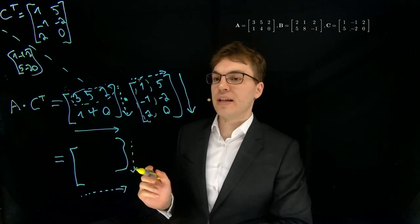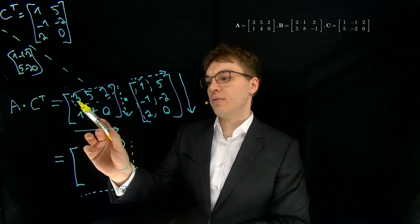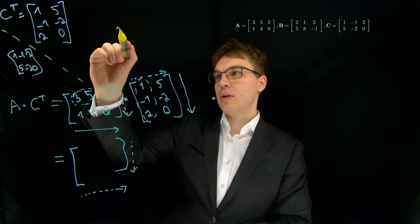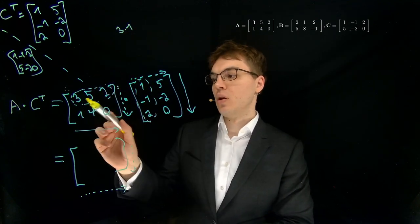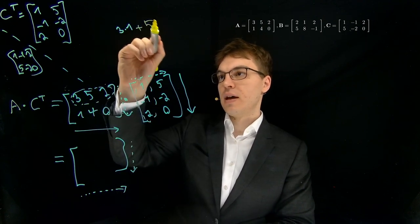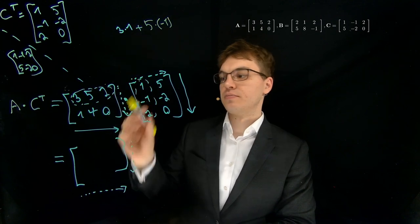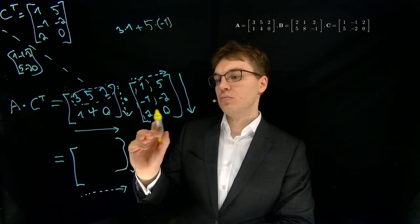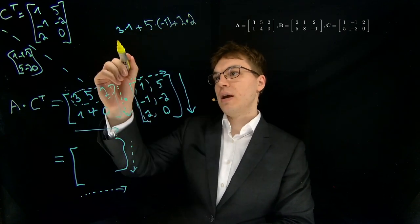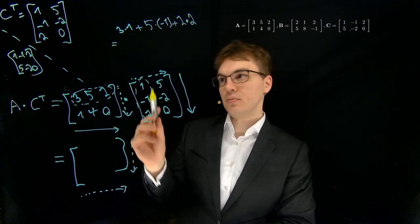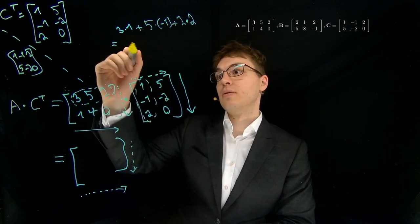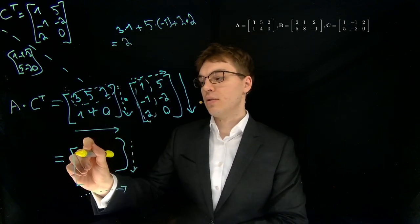And now we compute the vector dot product. So we take the first one here, multiply it with this one, so three times one. We take the second one here, multiply it with this one, five times minus one. We take the two, multiply it with a two. And then compute this. So it's three minus five plus four is two. So this is the result here.